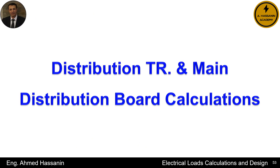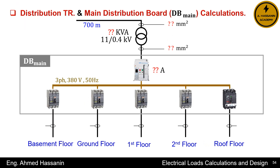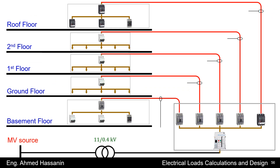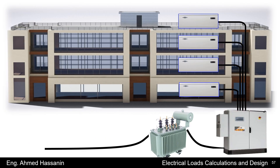The last lecture will cover the distribution transformer and the main distribution board calculations. After completing the various calculations for the building, I will explain how to determine and select the rated power of the medium voltage distribution transformer, the main distribution board, and the appropriate cross-sectional area of a medium voltage cable with a length of 700 meters. I will also calculate the voltage drop and perform the short-circuit calculation for this medium voltage cable. Finally, I will present a summary of calculations for each panel board on every floor and the final single line diagram including all circuit breaker data and cable cross-sectional areas for the entire building.